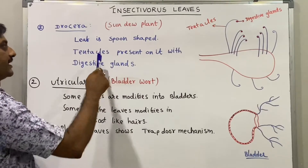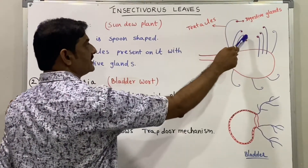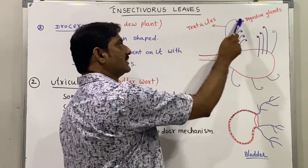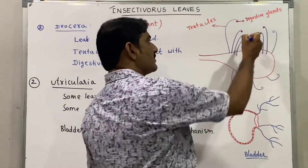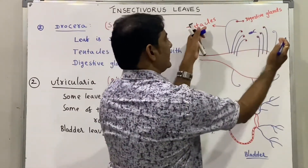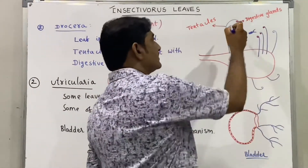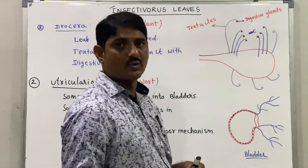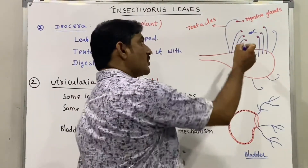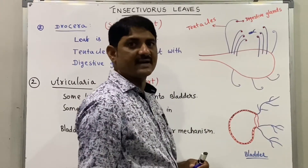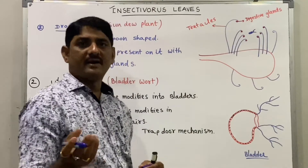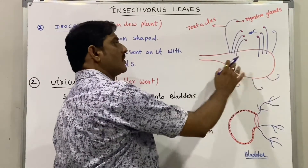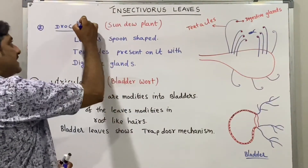In Drosera, commonly known as sundew plant, the leaf is spoon-shaped with tentacles that have digestive glands. When an insect lands, the tentacles trap it. The digestive glands produce proteolytic enzymes, and in the presence of these proteolytic enzymes, the insect is digested, providing nitrogen to the plant.